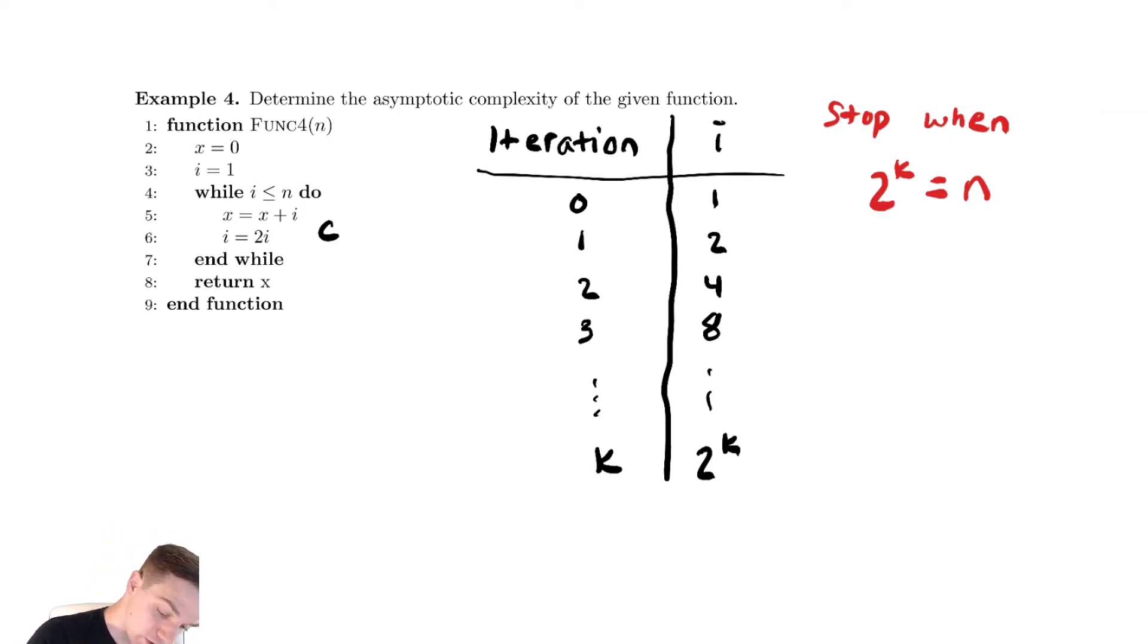So in order to solve for k I need to take a log base two of both sides. So if k equals log base two of n, t of n would be equal to, well the inside takes a constant amount of time, and how many times do I run it? Well I run it log base two of n times.